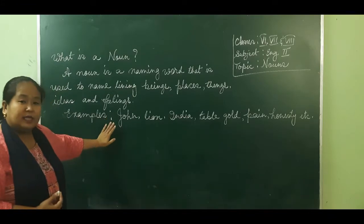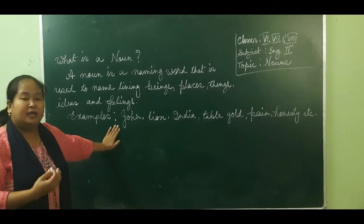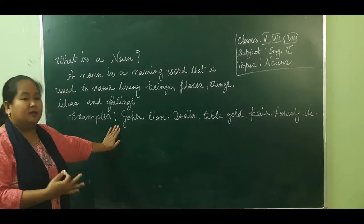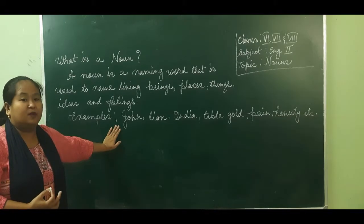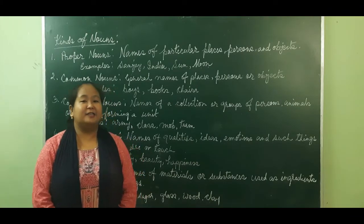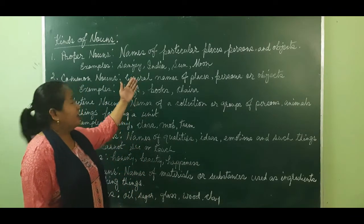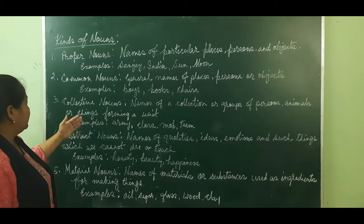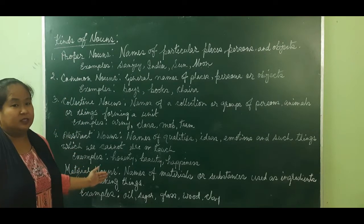So a noun is a naming word — the name of any person, any place, any animal, any object. Now let us learn the kinds of nouns. We have proper nouns, common nouns, collective nouns, abstract nouns, and material nouns.